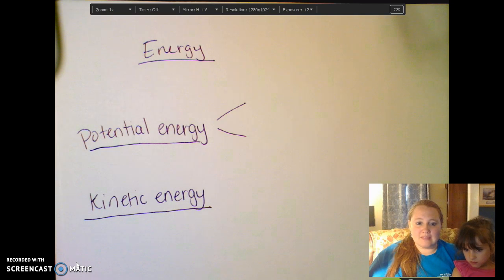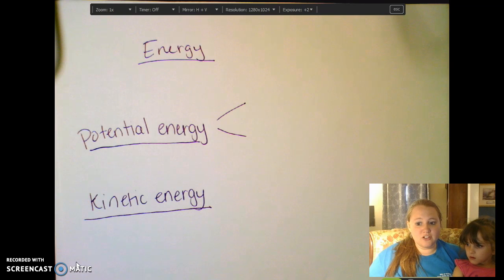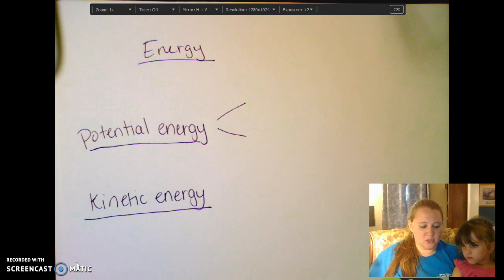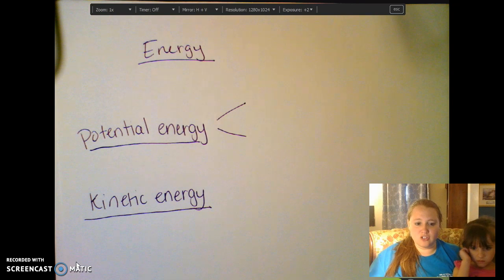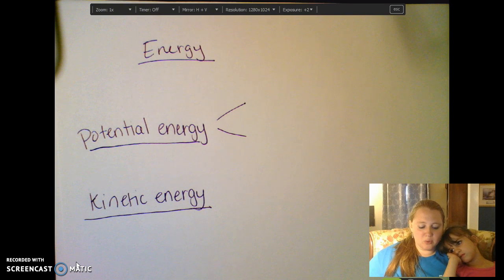First of all, energy is one of those really hard things to define. Really, it just describes the state of an object. I really think that's the best way to look at it, because the type of energy that something has or whatever is going on with the object will help us to determine whether it has potential energy, kinetic energy, heat, nuclear energy, whatever we're looking at.